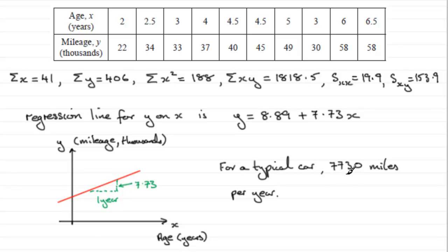You might want to round that up to 7,700. I'll leave it up to you. I'm sure the examiners are going to give some kind of approximation that they would allow for that. So for a typical car, 7,730 miles per year are covered. Let's just put that in there.